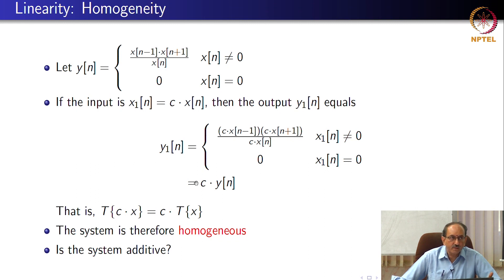So, the point of this example is to show that additivity and homogeneity are independent properties. You can have a system that is additive, but not homogeneous. You can have a system that is homogeneous, but not additive. Only when both additivity and homogeneity are satisfied, is the system linear, alright?